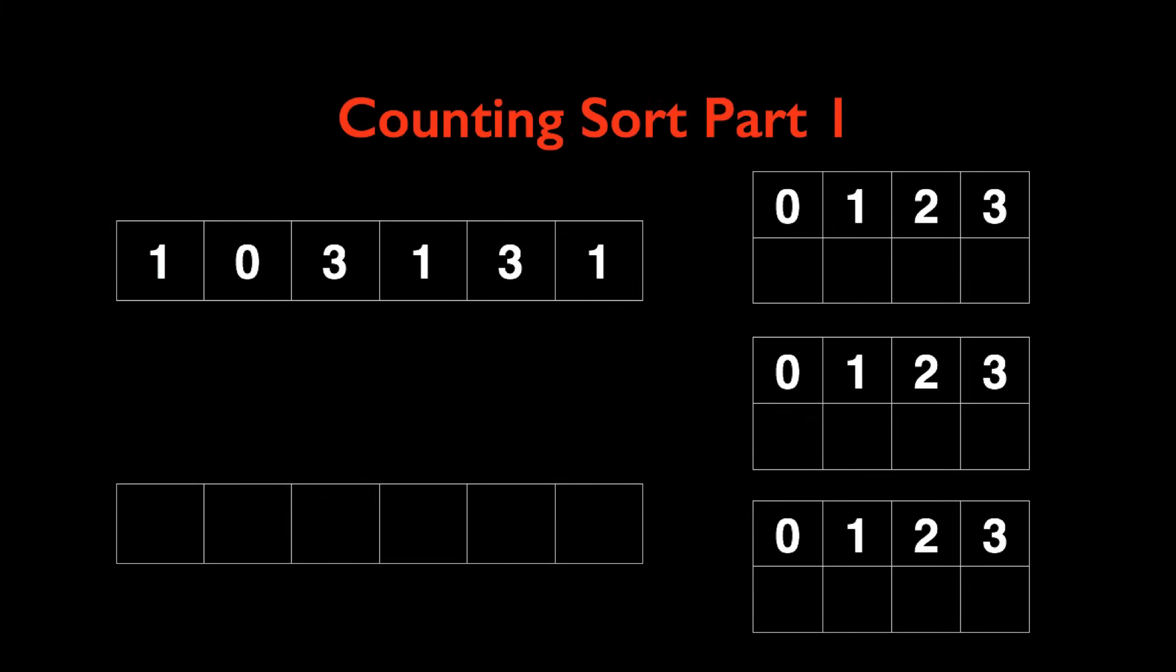The first part of applying counting sort is going to be finding the starting index for each number. It's going to be clear what I mean by that in a second. The first step for doing that is going to be counting the number of occurrences for each number in the array.